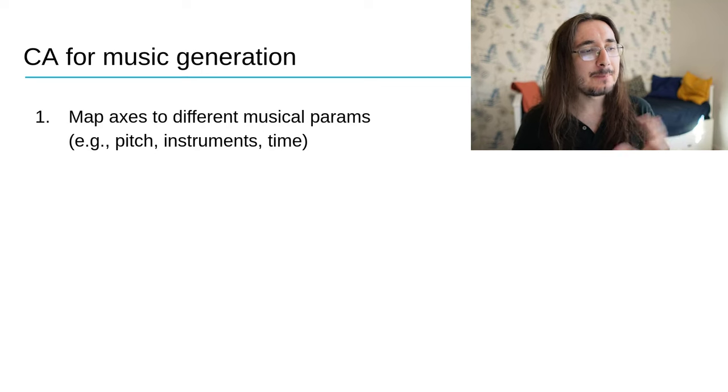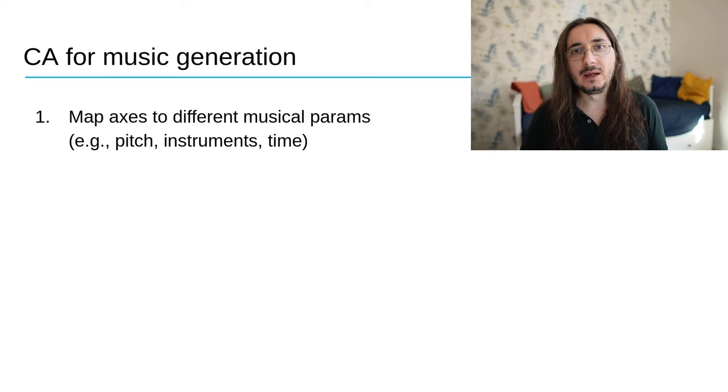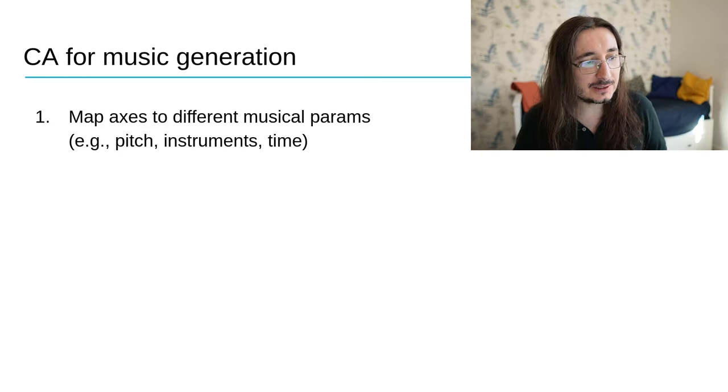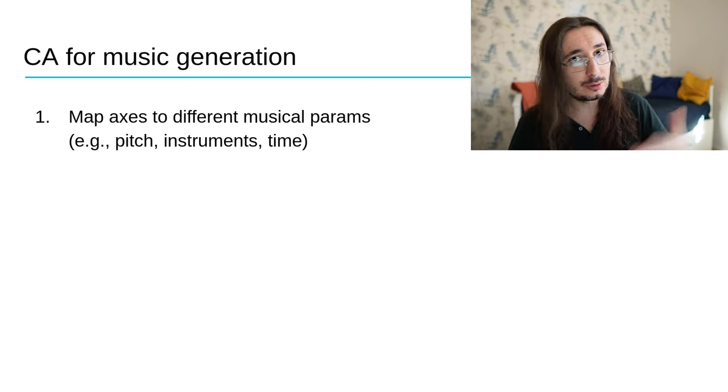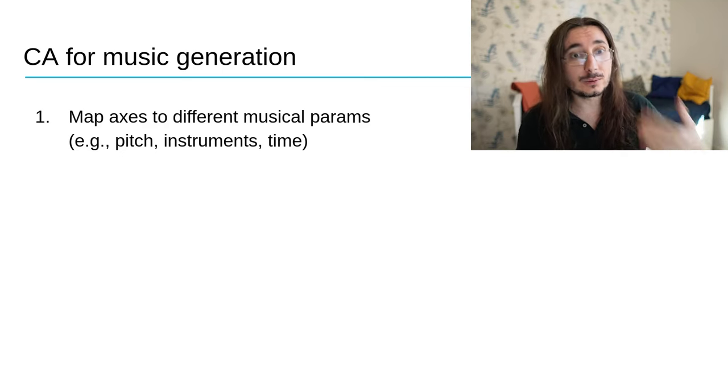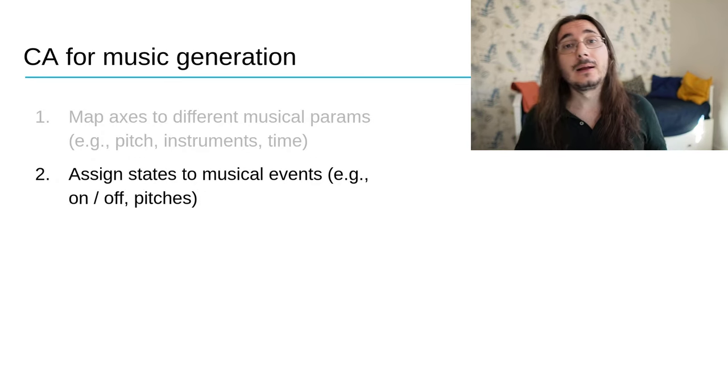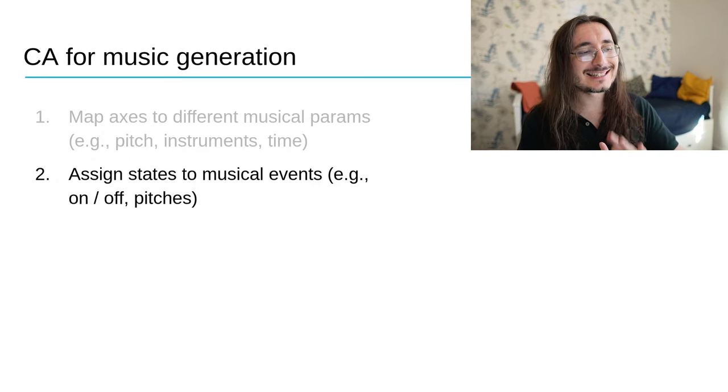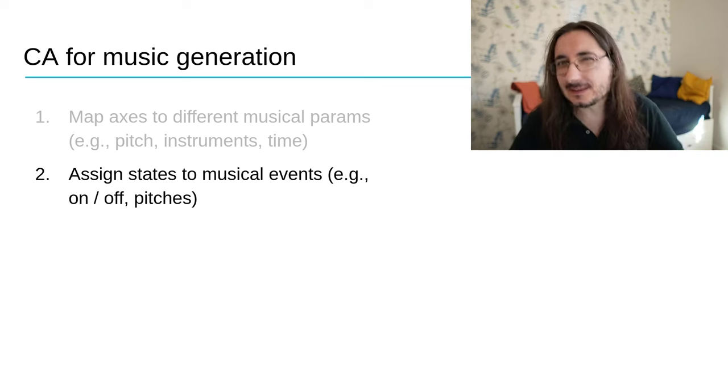So, I start by mapping axes to different musical parameters. So, the y-axis could be pitch, the x-axis could be time, or it could be instruments. You should find a mapping for the different axes. For example, if you're dealing with a two-dimensional grid, you're going to have two axes, and you need to understand what they represent.